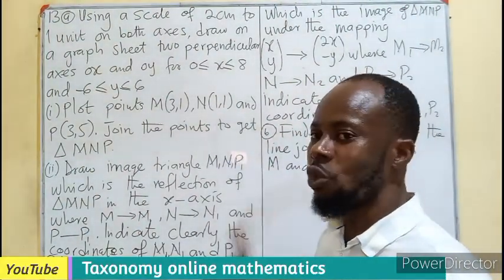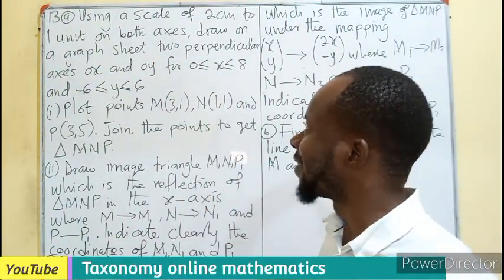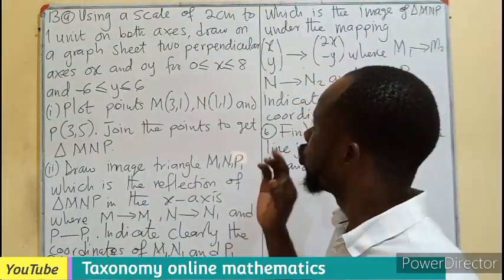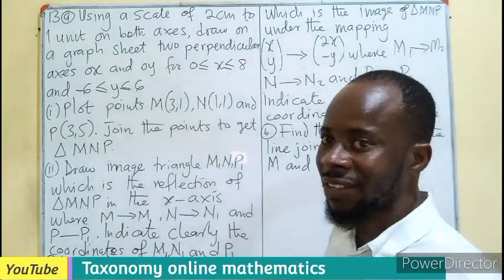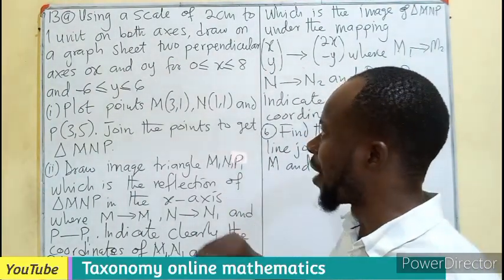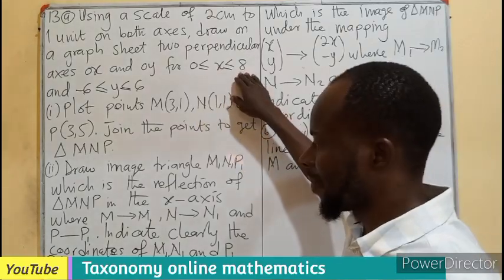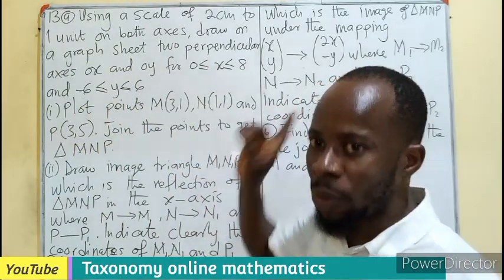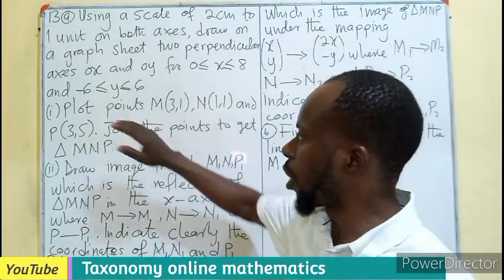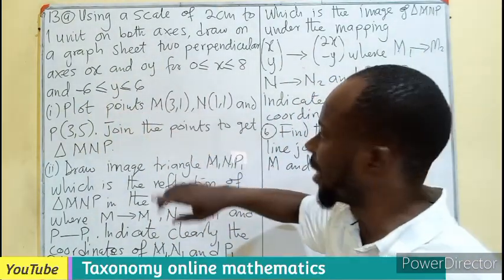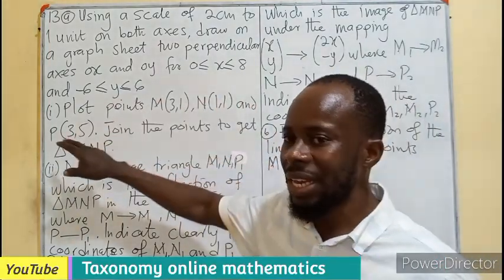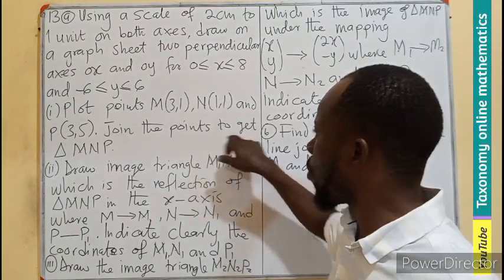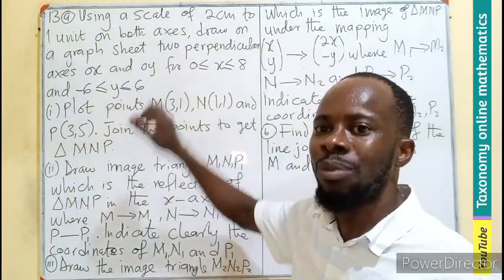Using a scale of 2 cm to 1 unit on both axes, we have to draw on a graph sheet two perpendicular axes, OX and OY. The interval of X is from 0 to 8, and the interval of Y axis is going to be negative 6 down to a positive 6. We have to plot the point M(3,1), N(1,1), and P(3,5).